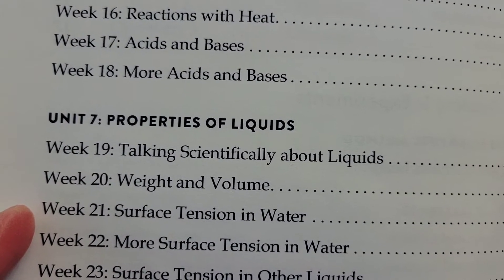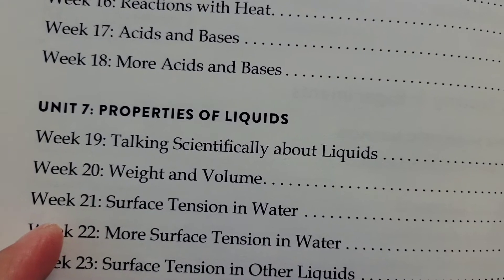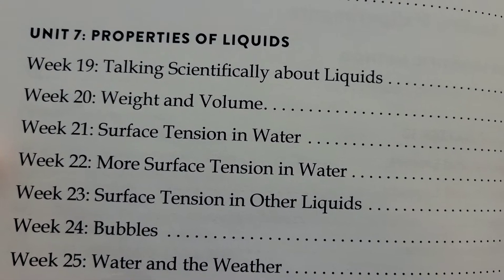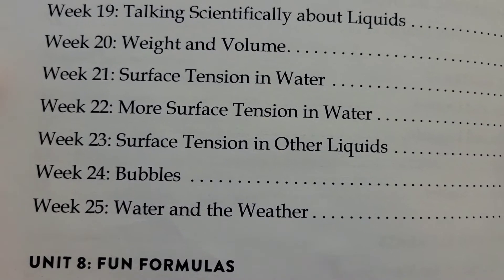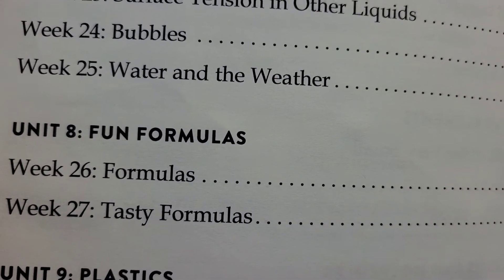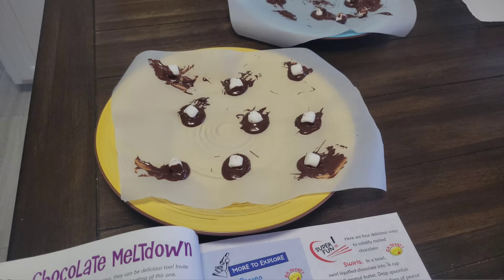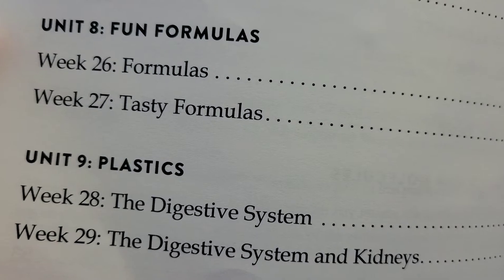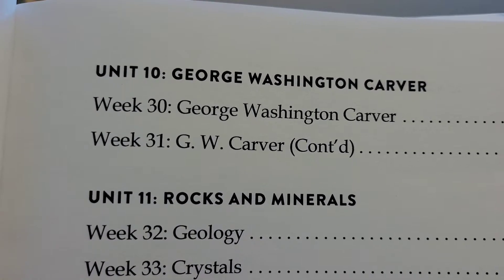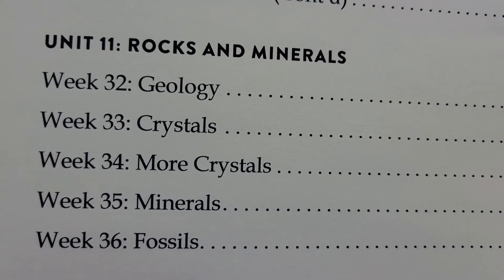Unit 7 is Properties of Liquids — talking scientifically about liquids, Weight and Volume, Week 21 Surface Tension in Water, Week 23 Surface Tension in Other Liquids, Week 24 Bubbles, Week 25 Water and the Weather. Unit 8 is Fun Formulas — Week 26 formulas, Week 27 Tasty Formulas, which are experiments we can eat. Unit 9 is Plastics, which covers recycling plastics. In Unit 10, we're going to learn the life of George Washington Carver.